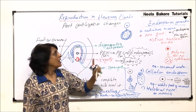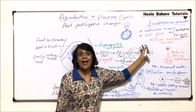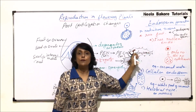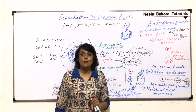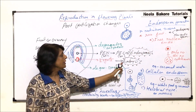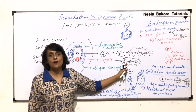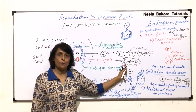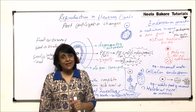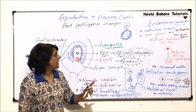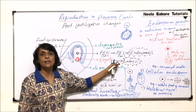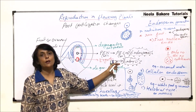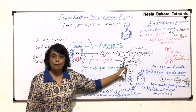We have now understood one process under post-fertilization changes — endosperm formation. Endosperm is the nutritive tissue that supplies all nourishment required for the development of the embryo. In the next part, we will take up the next event: the formation and development of the embryo.